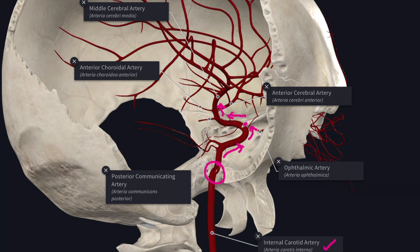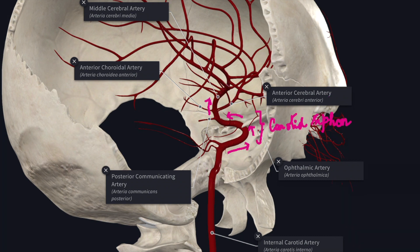Here it terminates by dividing into two branches: a large middle cerebral artery and the anterior cerebral artery. So the termination of the internal carotid artery is by dividing into the middle cerebral artery and the anterior cerebral artery.